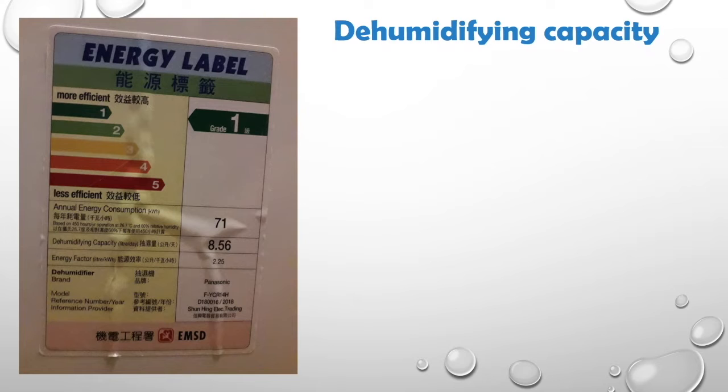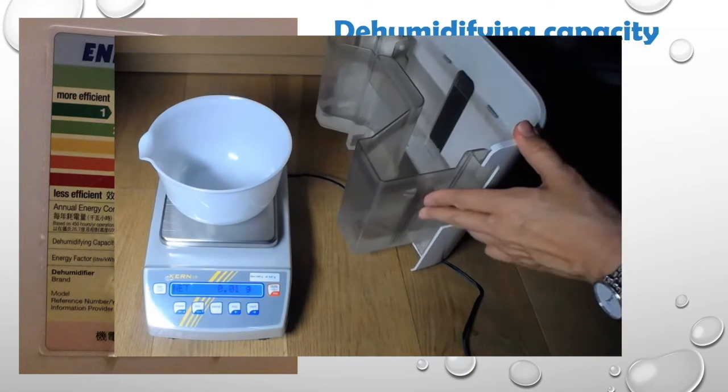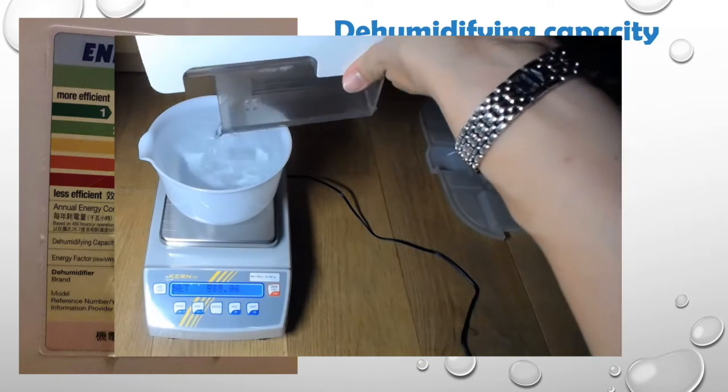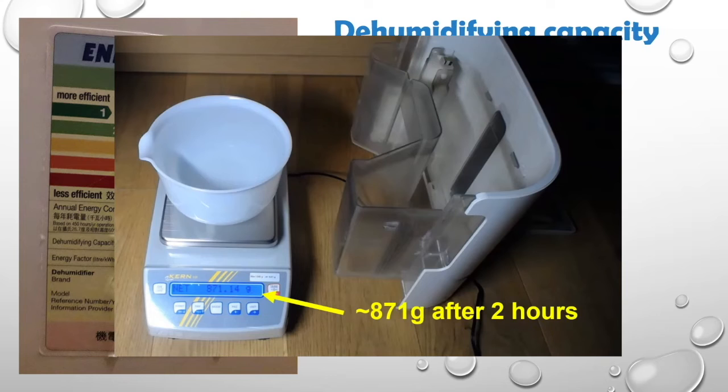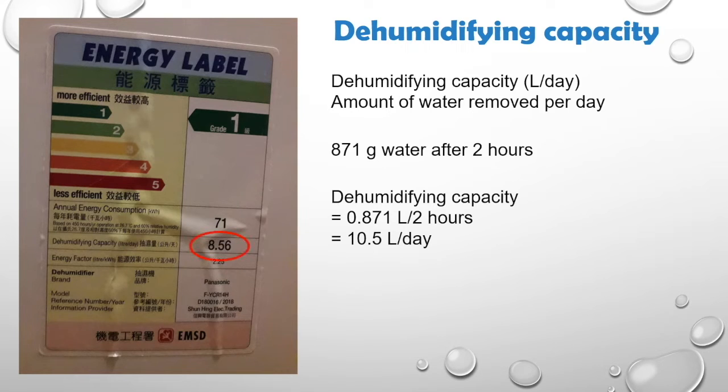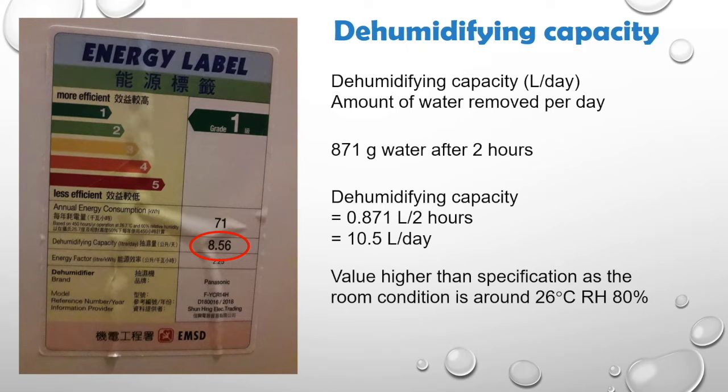Next, for the dehumidifying capacity, we can use a balance to measure out the weight of the water from our experiment. After 2 hours, the total mass of water collected is 871 g. So, if we convert to liters per day, it corresponds to a dehumidifying capacity of 10.5 liters per day, a bit higher than that on the energy label. But that is because the relative humidity of our room is about 80%, higher than the 60% as specified by the energy label.